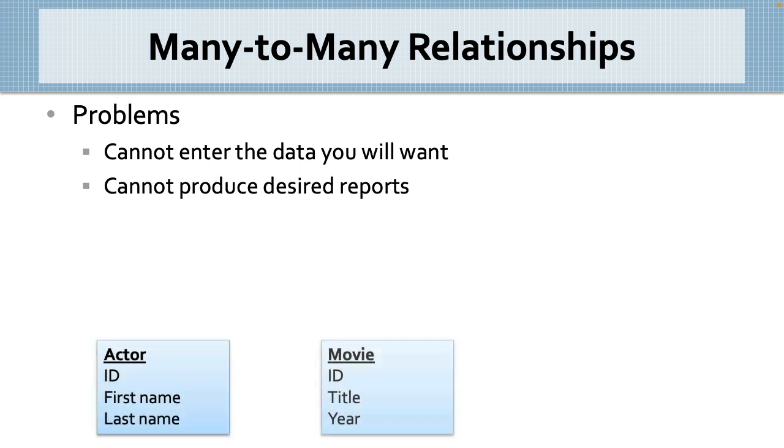In the actor and movie database, for example, if you have only these two tables, where would you enter the name of the character an actor played in a specific movie? There is no table for storing data that is specific to actor X playing in movie Y.